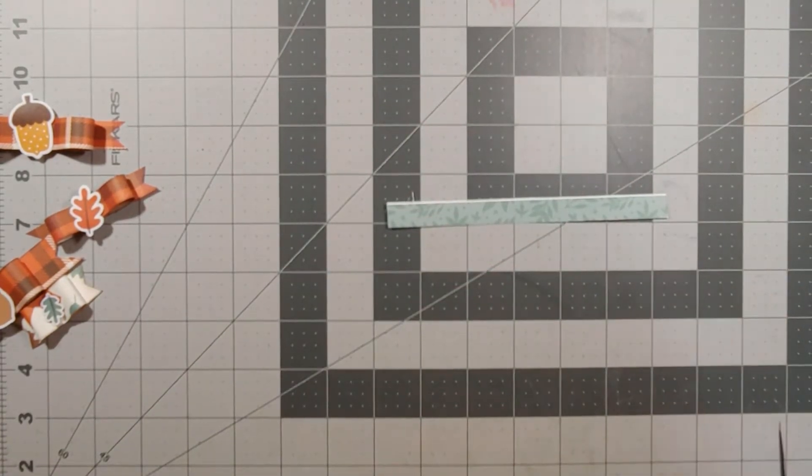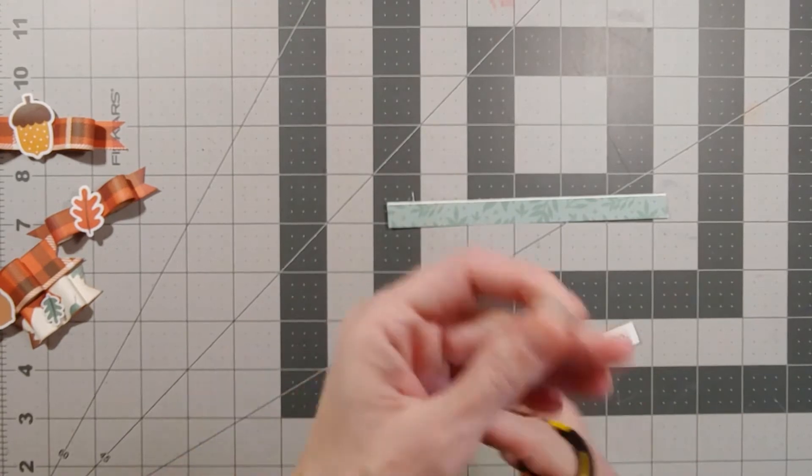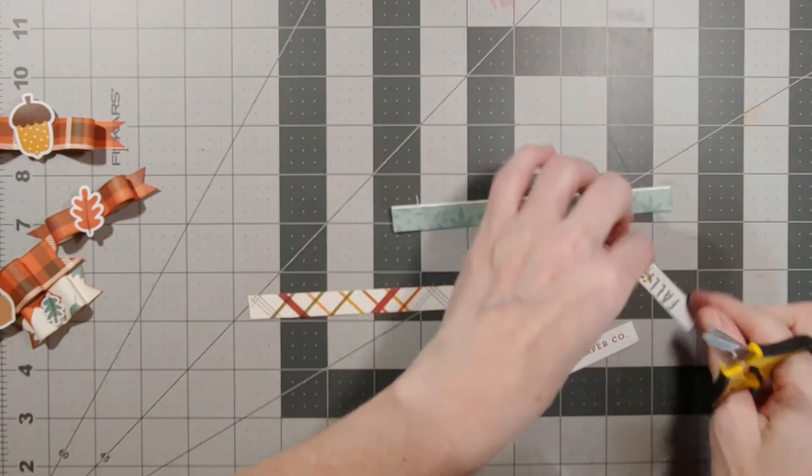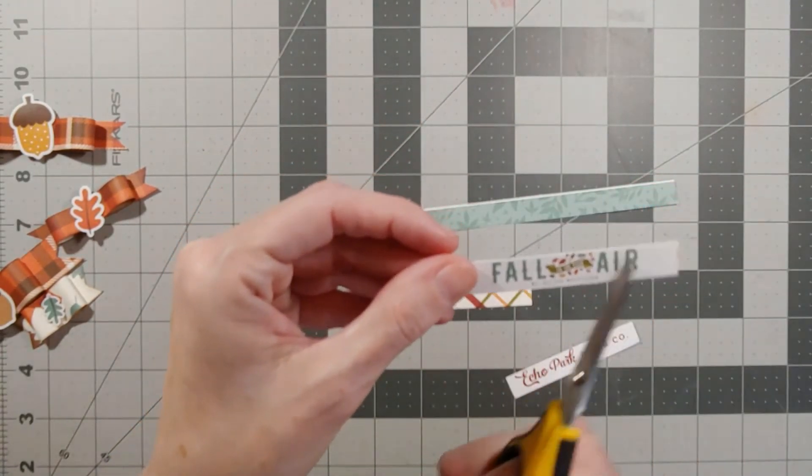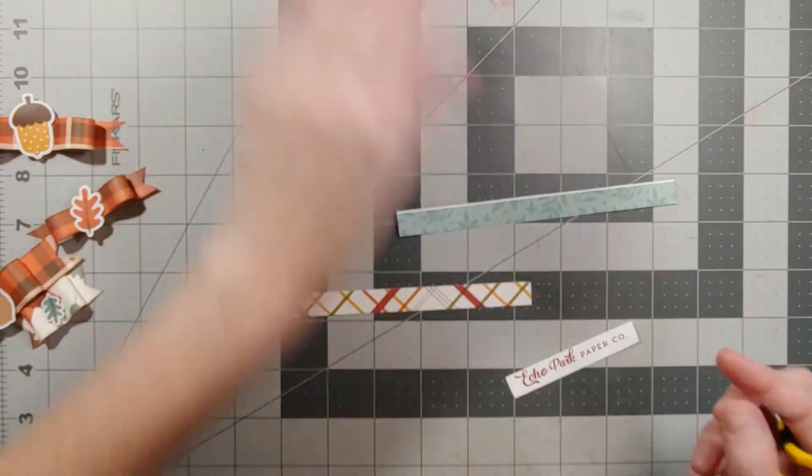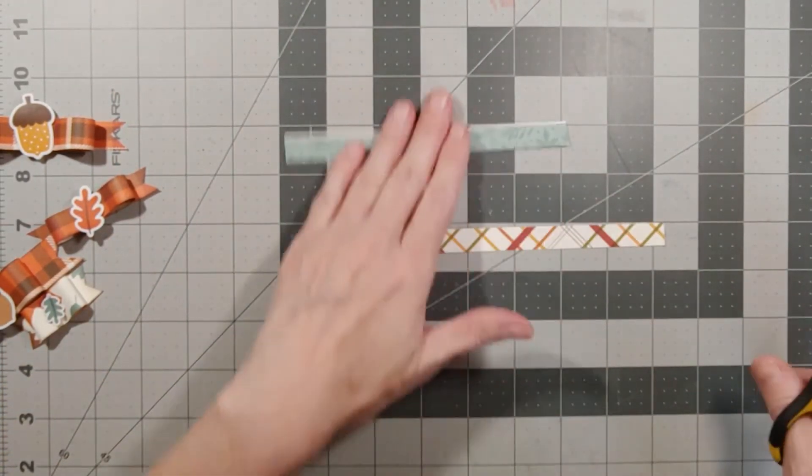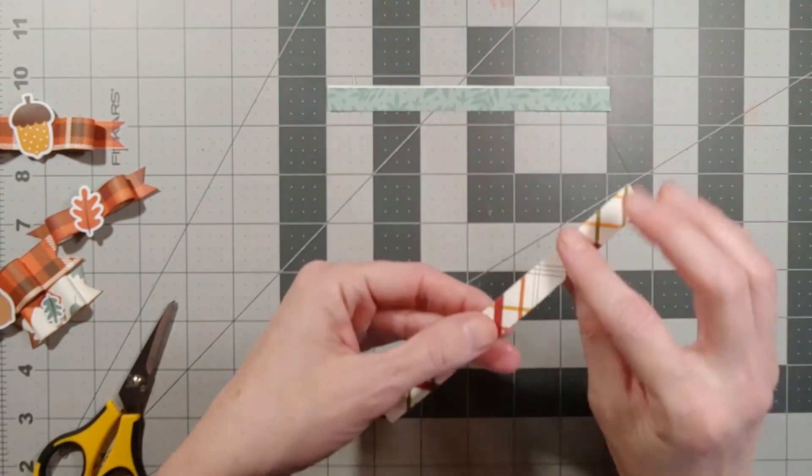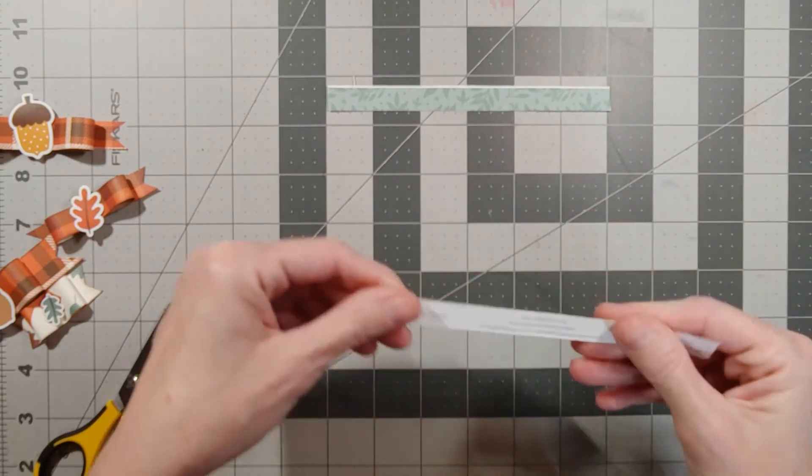So you take it and just snip that off and put it to the side because you can use that too for something else. Okay, I have to sit down to do this. So we're going to snip these off. This one says fall is in the air, but I love the colors. I've done a bow tutorial during my Halloween series, but I'm going to do another one.